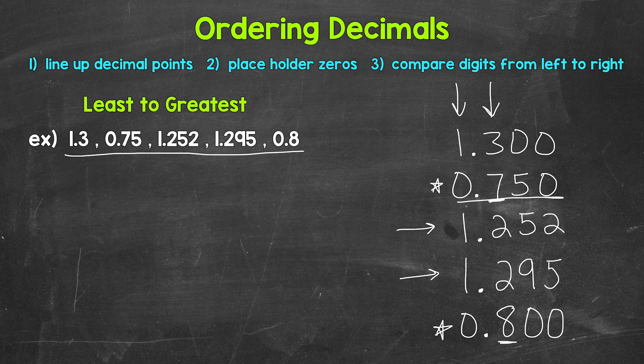So this is the least. So let's write 75 hundredths first here. And I wrote the decimal from the original list. Again, 75 hundredths, not the equivalent decimal with the placeholder zero.